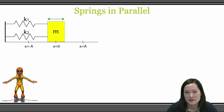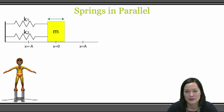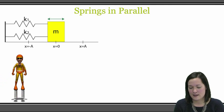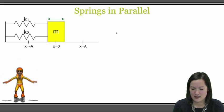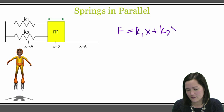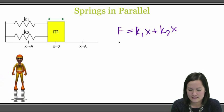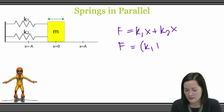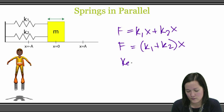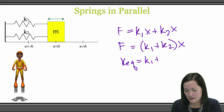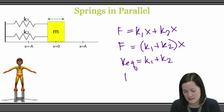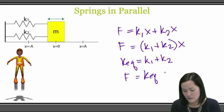For springs in parallel, you can calculate the equivalent spring constant for the system by starting with Hooke's Law, f equals kx. Recognizing that displacement is the same for both springs, we can find that f is equal to k1x plus k2x, or f is equal to (k1 plus k2) times x. So here we find that k_eq is equal to k1 plus k2, because they have the same displacement, and f is equal to k_eq times x.